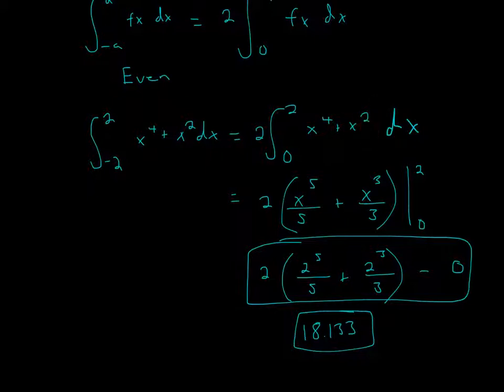And then x squared right here, add 1, so it'll be 3, divided by 3, because that's the new exponent. And then keep the 2, and now we evaluate it. This is the sign to evaluate it, from 2 to 0.